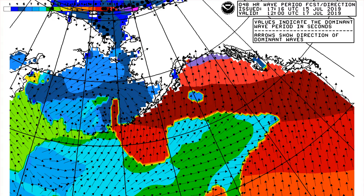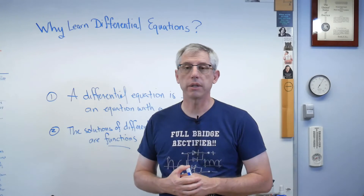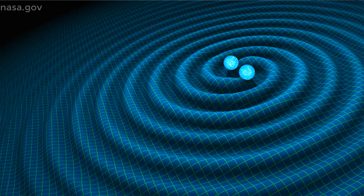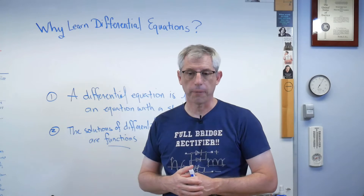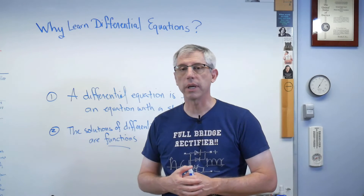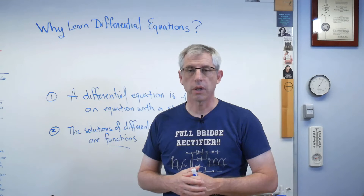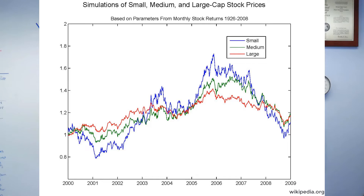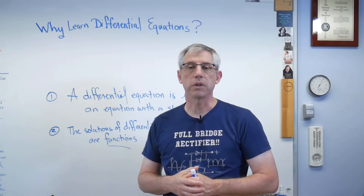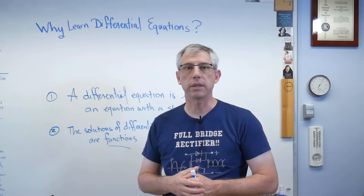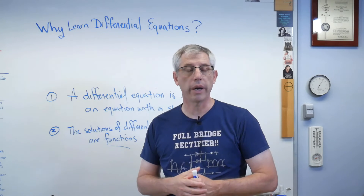If you want to get really big, general relativity, which describes the motion of things as large as galaxy clusters, that's a set of differential equations as well. And if you want to look in economics, there's an equation called the Black-Scholes equation — a partial differential equation that describes the behavior of options and derivatives. It's so important that it was the basis of the 1997 Nobel Prize in economics.